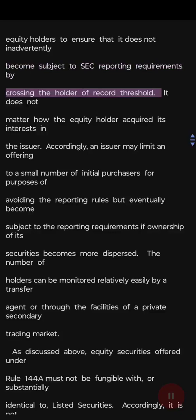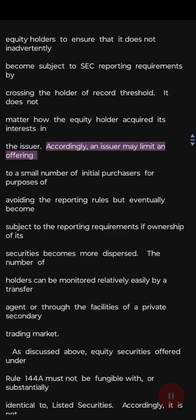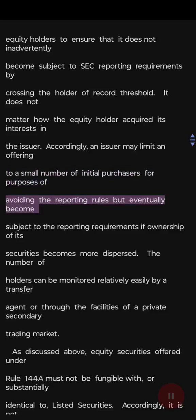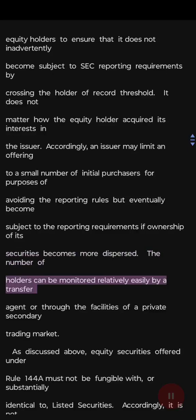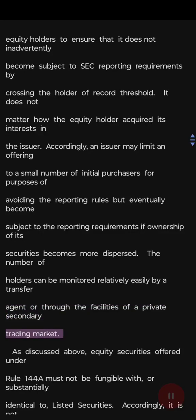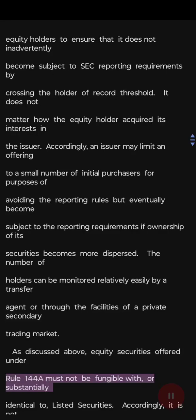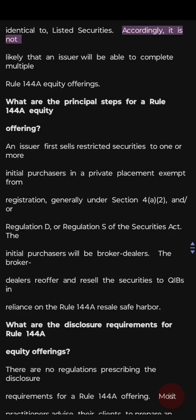A non-reporting issuer that conducts a Rule 144a equity offering must monitor the number of its equity holders to ensure that it does not inadvertently become subject to SEC reporting requirements by crossing the holder-of-record threshold. It does not matter how the equity holder acquired its interests in the issuer. An issuer may limit an offering to a small number of initial purchasers to avoid the reporting rules, but eventually become subject to reporting requirements if ownership of its securities becomes more dispersed. The number of holders can be monitored relatively easily by a transfer agent or through the facilities of a private secondary trading market. Equity securities offered under Rule 144a must not be fungible with or substantially identical to listed securities; accordingly, it is not likely that an issuer will be able to complete multiple Rule 144a equity offerings.